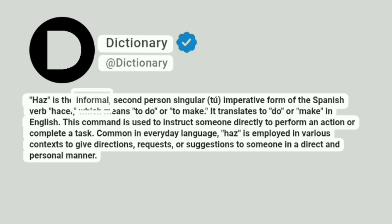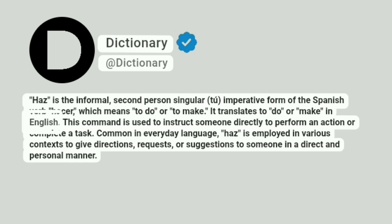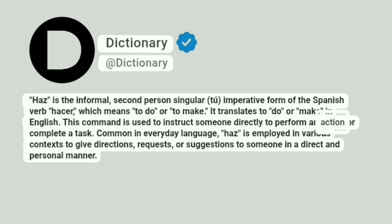Haz is the informal second-person singular imperative form of the Spanish verb hacer, which means to do or to make. It translates to do or make in English. This command is used to instruct someone directly to perform an action or complete a task.